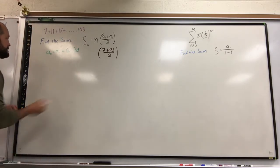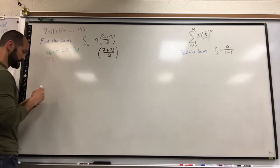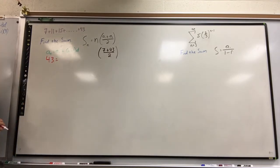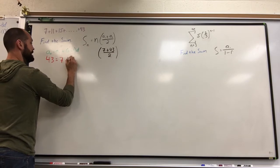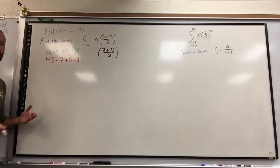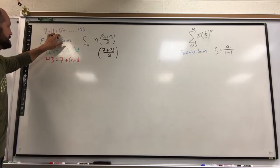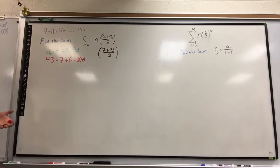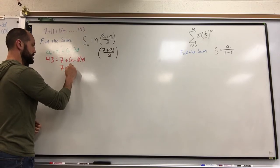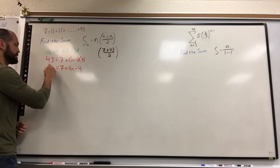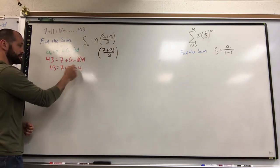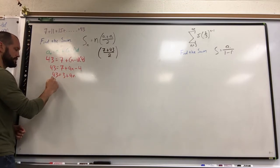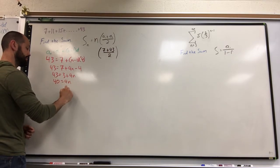a sub n is still 43, equals a sub 1, still 7. Now the common difference you just got to look at — how do you get from 7 to 11 to 15? Notice there's a consistent pattern here: they add 4 every time. Solve for n, basic algebra. I'm going to distribute the 4, giving me 4n minus 4 equals 43. From here we're going to combine like terms, we're going to get 3 plus 4n equals 43.